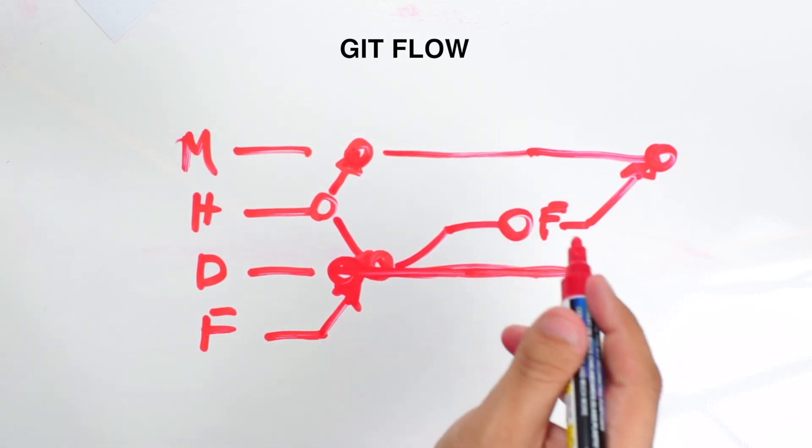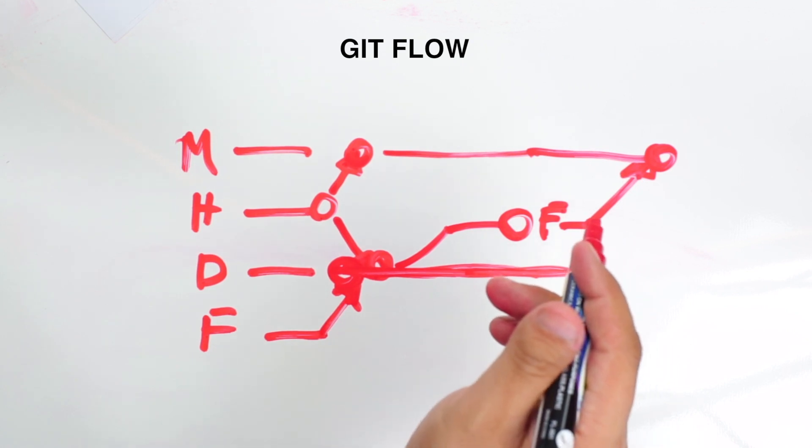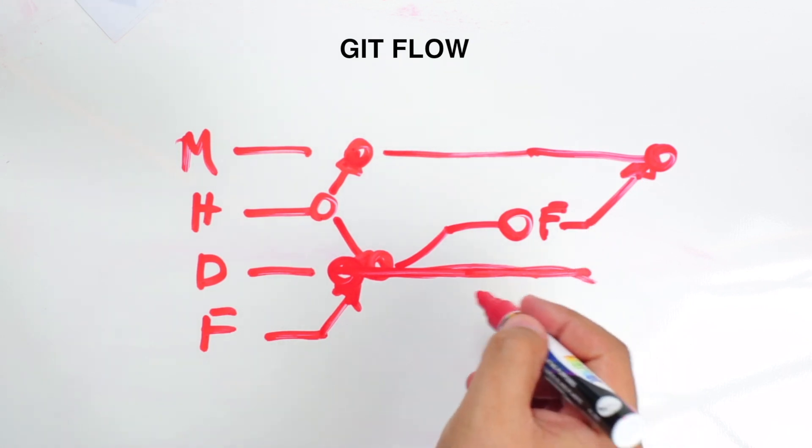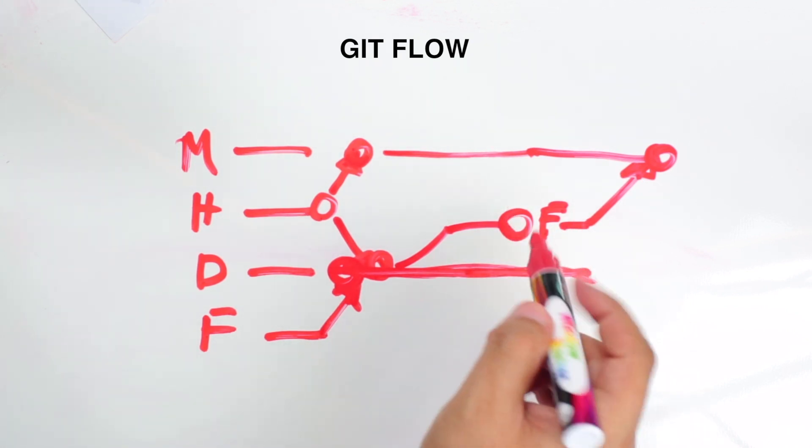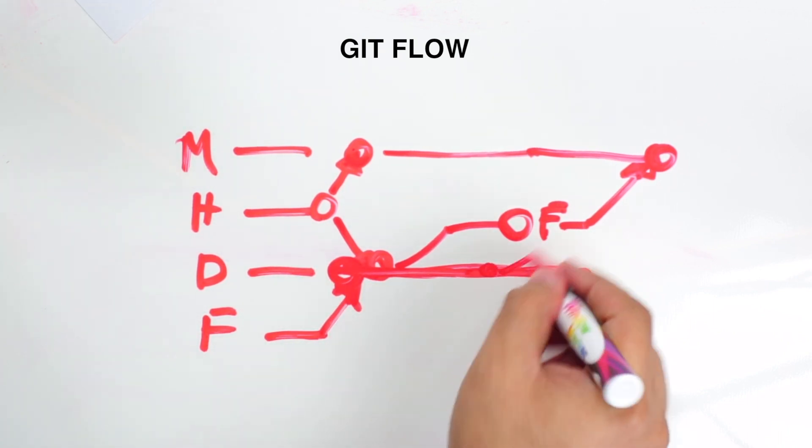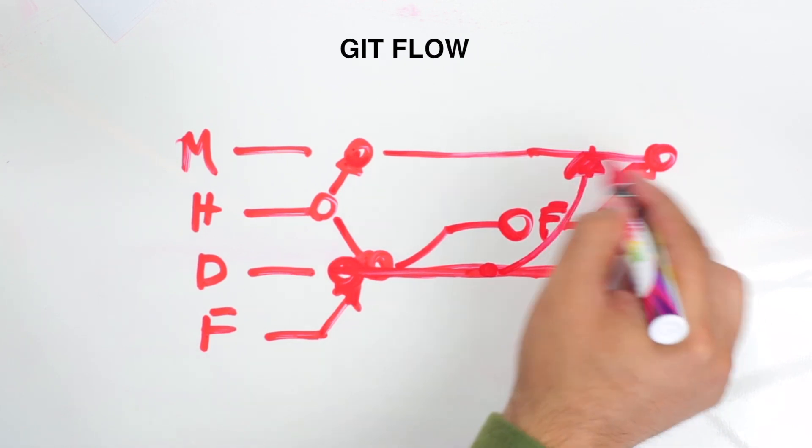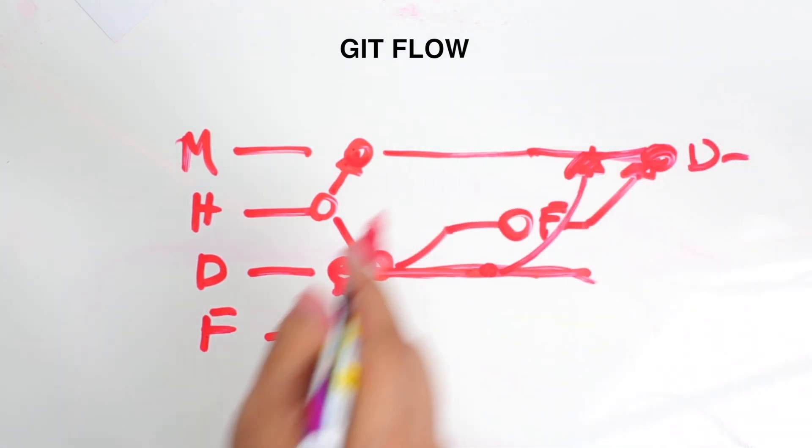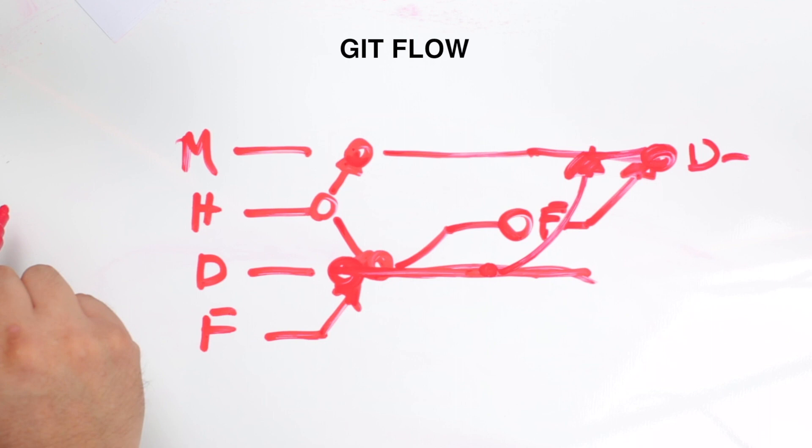To get a rough idea, it's going to be something like this. Sometimes people go directly from the developer branch and merge it into the master branch, and eventually it gets deployed through some sort of deployment system.